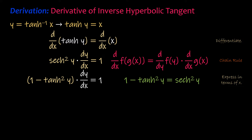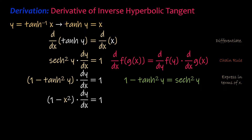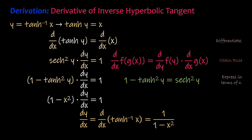Then, substitute x equals the hyperbolic tangent of y. Divide both sides of the equation by the quantity 1 minus x squared. Therefore, the derivative with respect to x of the inverse hyperbolic tangent of x is equal to 1 all over the quantity 1 minus x squared.